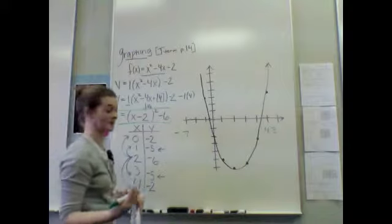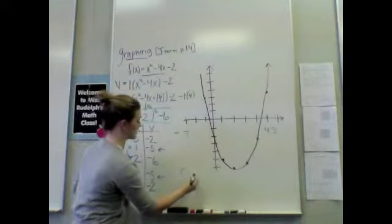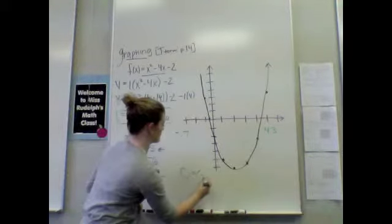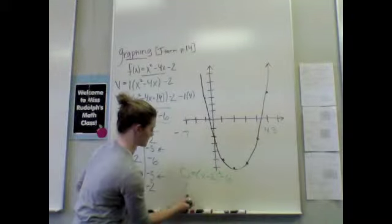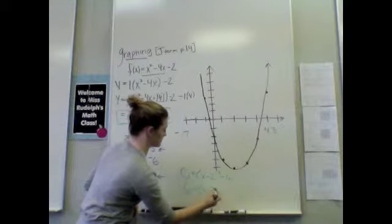I'm going to use my vertex form here, or you can use your quadratic formula. And we're going to set that equal to 0, because, once again, we're looking for x-intercepts. My y-value will be 0. So, we have x minus 2 squared minus 6. I'm going to add 6 onto both sides.